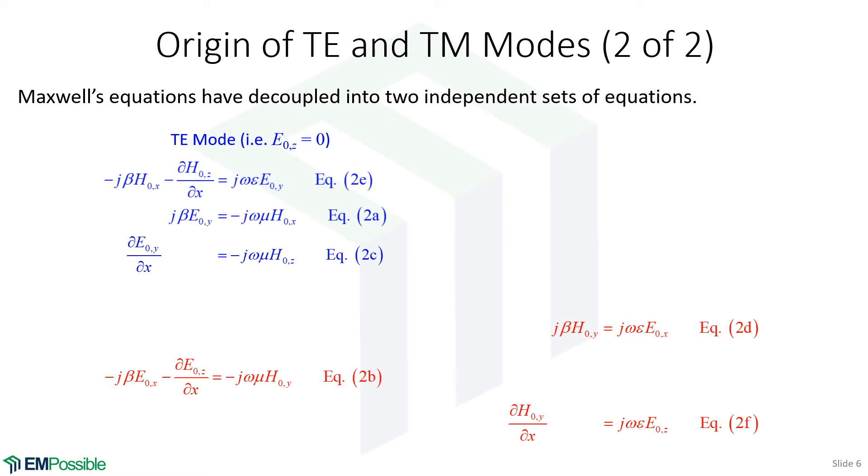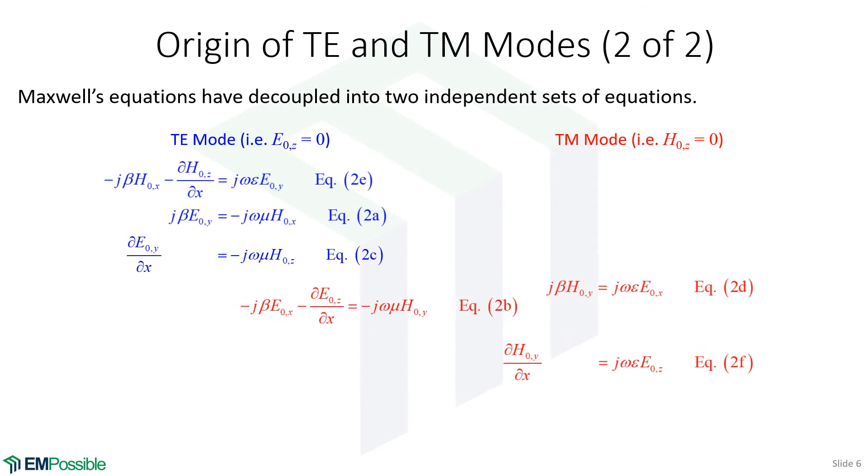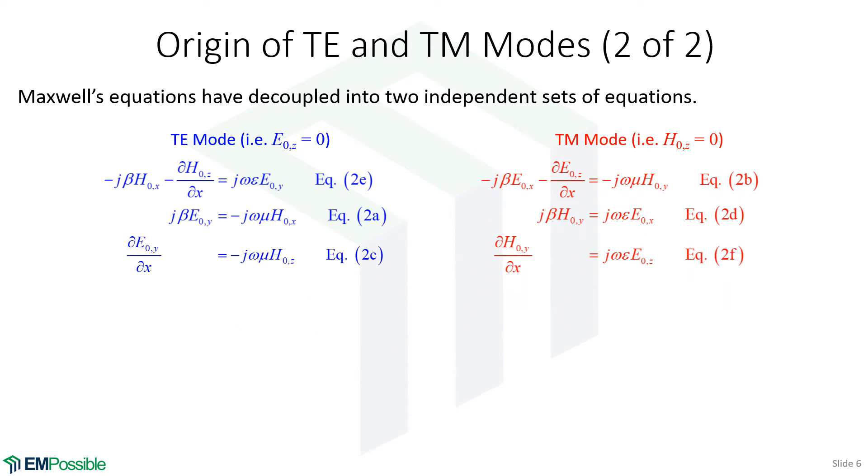That means E_z is zero for the mode that we would calculate from the blue equations. Thus, we call it the TE mode. Similarly, the other three equations we would call the TM mode because there is no H_z in them. H_z would be zero. Thus, it's called the TM mode.